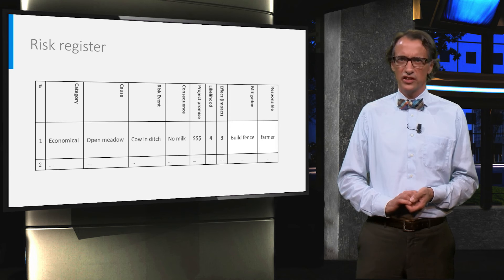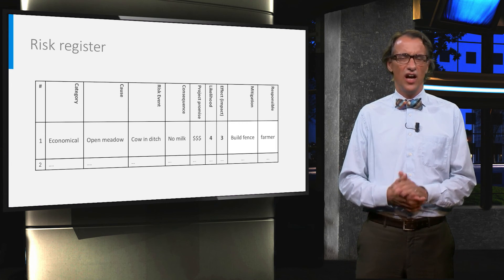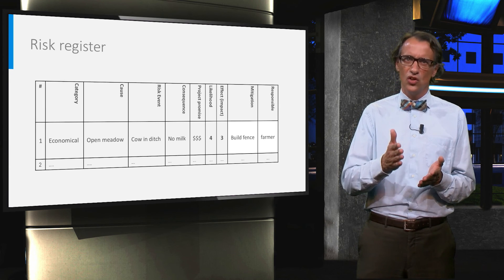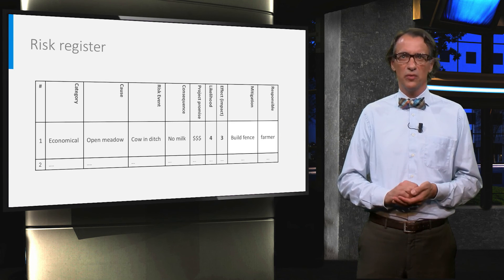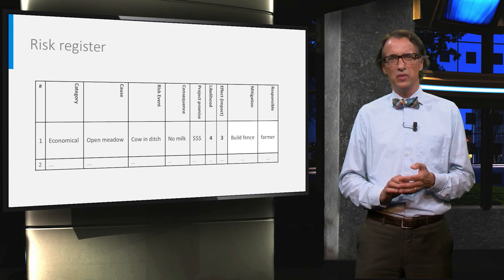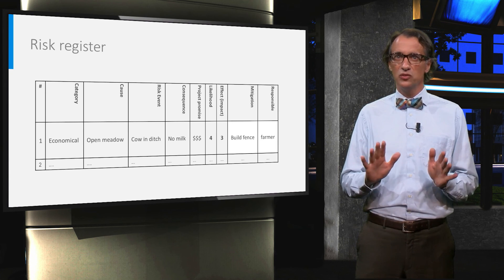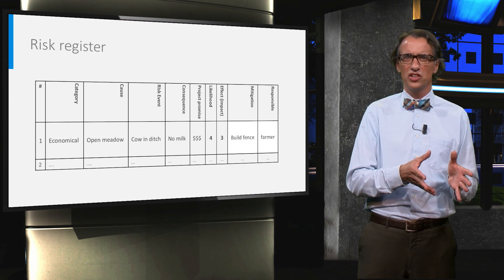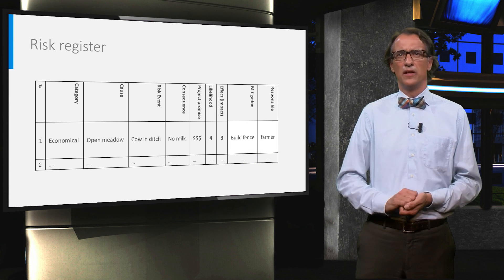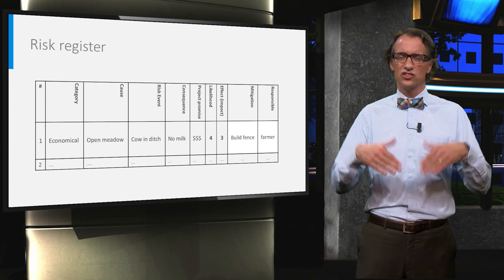You can use a risk register to systematically store the identified risks and the proposed mitigation strategy. Using the example of the cow, after category, you can see that cause, event, and effect or consequence are mentioned. Further on, the likelihood and effect or impact are presented. Also, the mitigation measures taken and who is responsible for the risks are listed in the risk register. Risk management is not a one-time exercise — it is a process that starts in the early project phases and needs attention throughout the whole process, even more because the project might really benefit from upside risks: the opportunities.